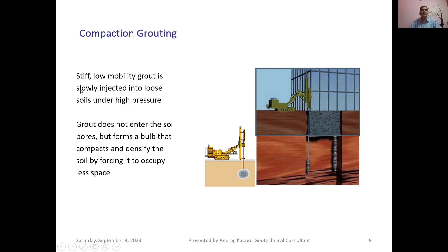Compaction grouting involves stiff, low-mobility grout being slowly injected into loose soils under high pressure. The grout does not enter the soil pores but instead forms a bulb. This bulb compacts and densifies the soil by forcing it to occupy less space, after which the structure is built on such treated soil.